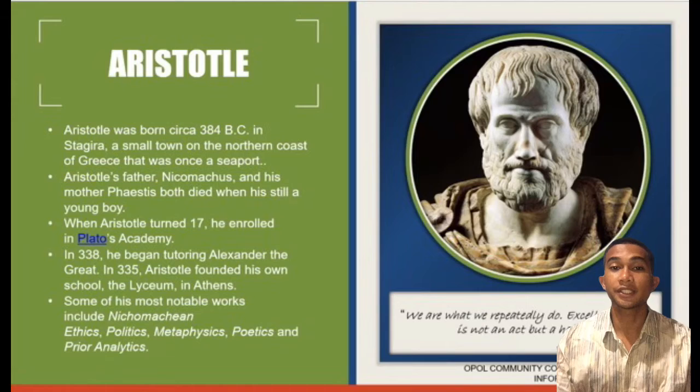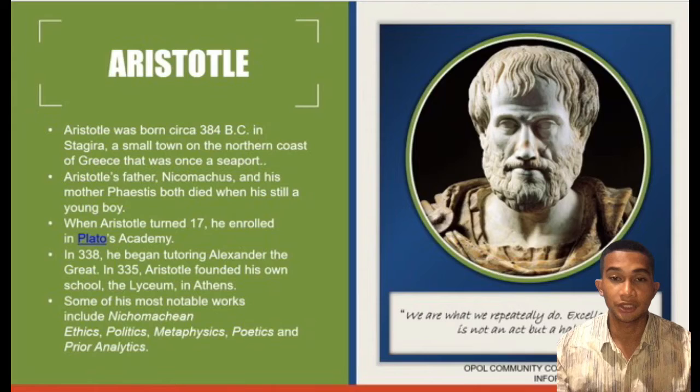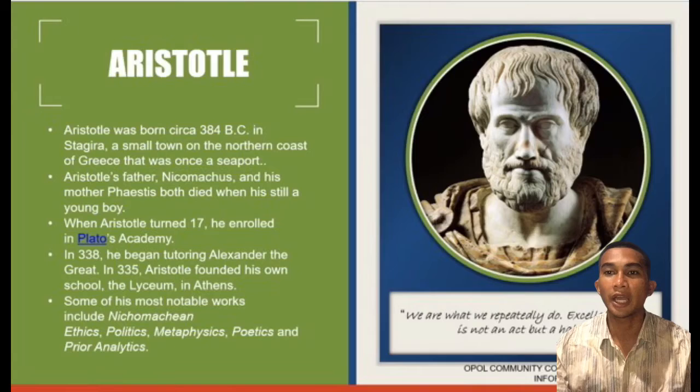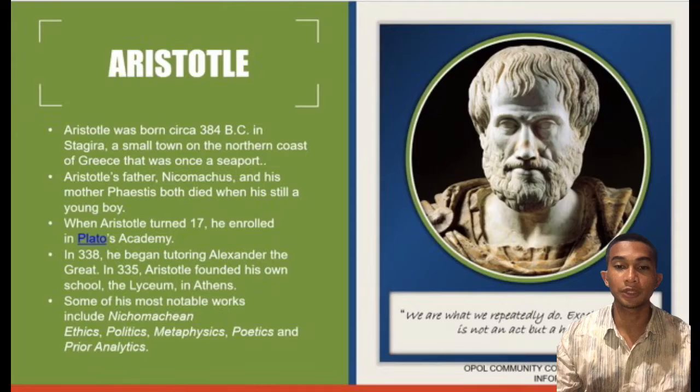Aristotle was born in circa 384 BC in Stagyria, a small town in the northern coast of Greece that was once a seaport. Aristotle's father's name is Nicomikos and his mother's name is Pestes. Both died when Aristotle was still a young boy. When Aristotle turned 17, he enrolled in Plato's Academy.